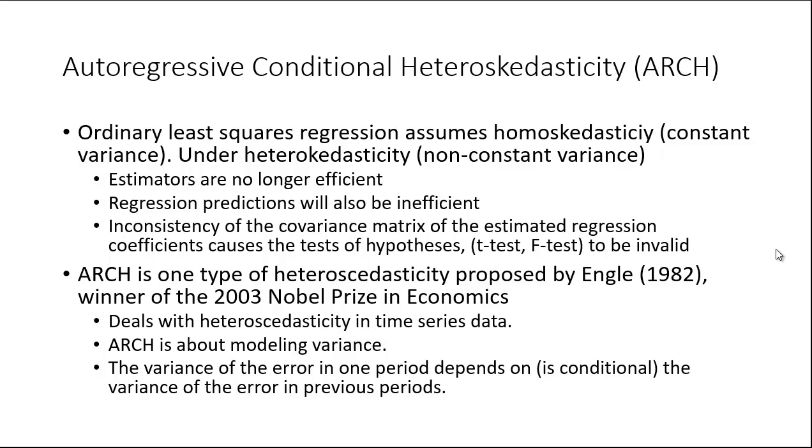I want to talk about the ARCH, or autoregressive conditional heteroskedasticity model. You may be aware that ordinary least squares regression assumes homoskedasticity, that is constant variance. Under heteroskedasticity, which means non-constant variance, many properties of basic regression are no longer valid. Estimators are no longer efficient, regression predictions will also be inefficient, and many tests like the t-test and f-test will be invalid.